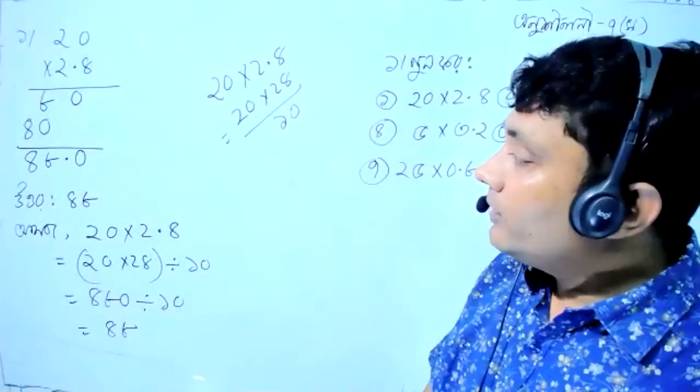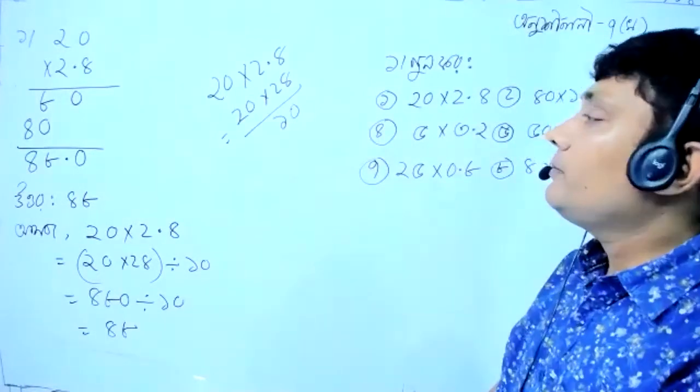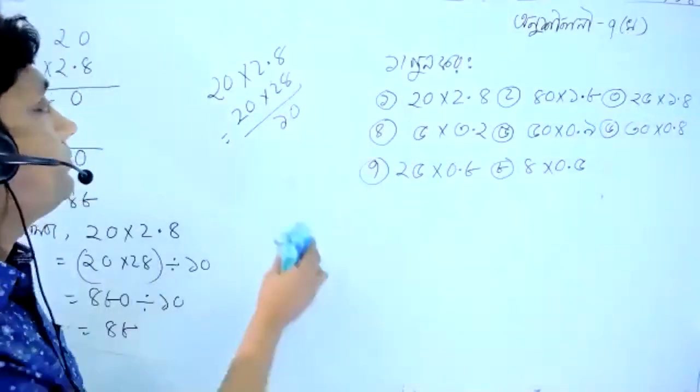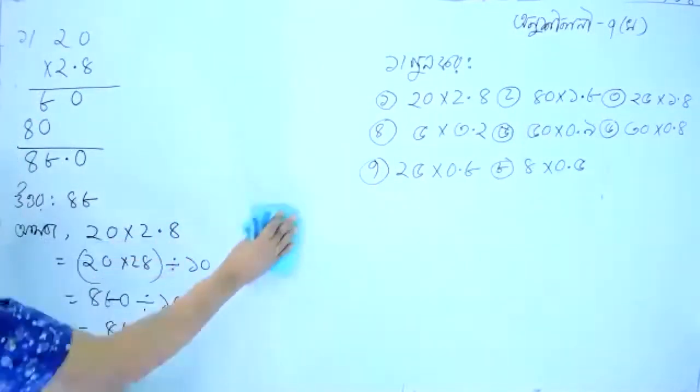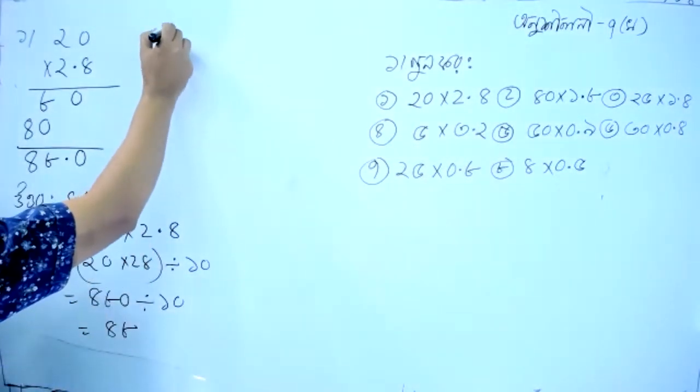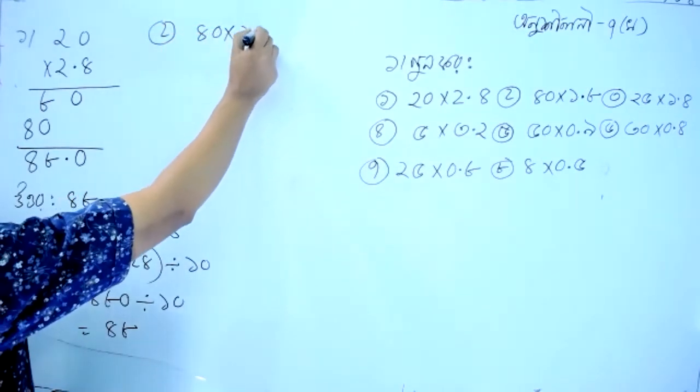So you can see this. Because the number of people have been in the number of people, and they have been in the number of people. So you can see this, so let's see.